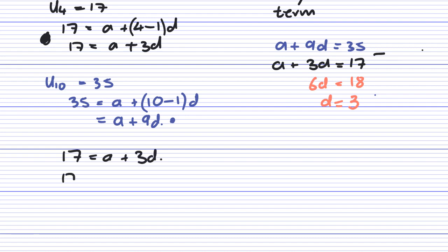17 equals A plus 3D, but D is 3. So 17 equals A plus 3 times 3. So A must equal 17 take away 9, which is 8.